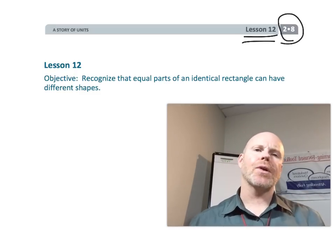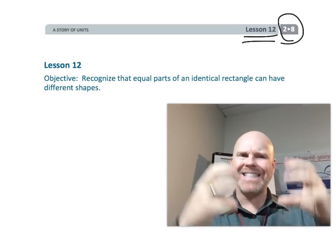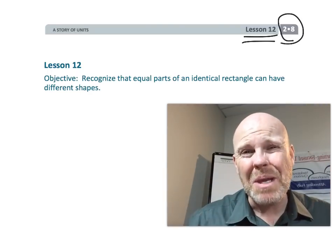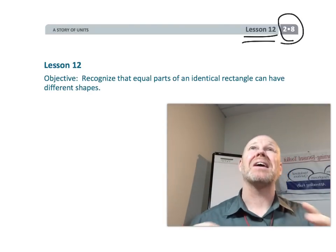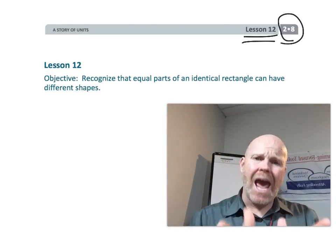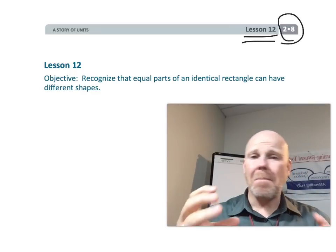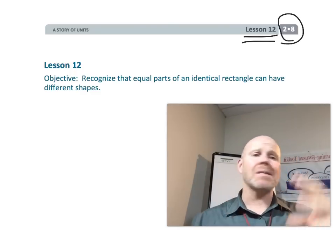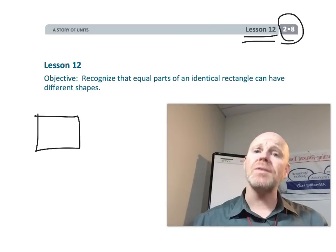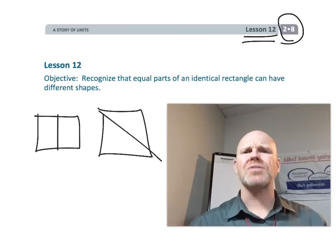In this lesson, students are going to learn that equal parts of an identical rectangle can have different shapes. What I mean by that is a rectangle can be cut into halves, but the halves might look different. In one case, it might look like rectangles, while in another case, the halves might look like triangles. So let's get started.